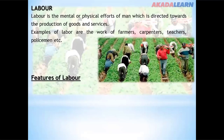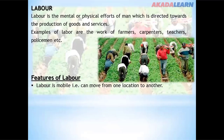Labor is mobile — it can move from one location to another. For example, a teacher can move from Nigeria to any other country and offer his or her services as a teacher. Labor also controls other factors of production; without labor, other factors of production may not be realized.